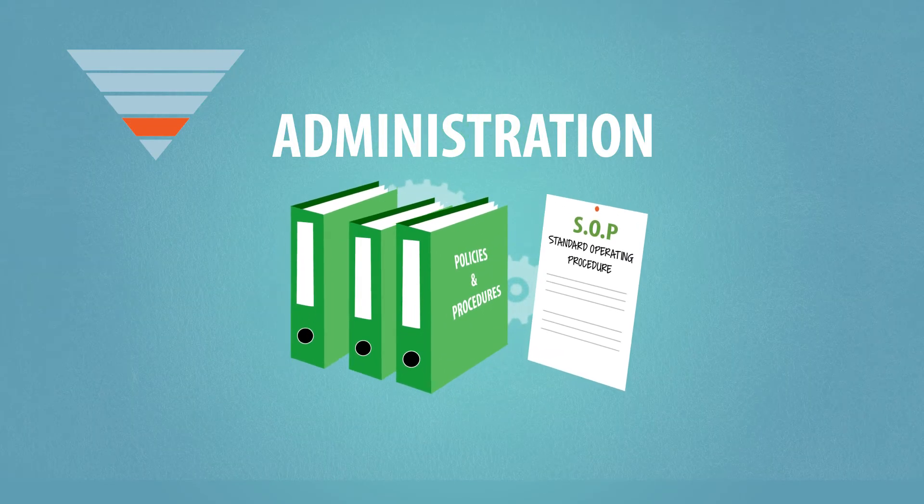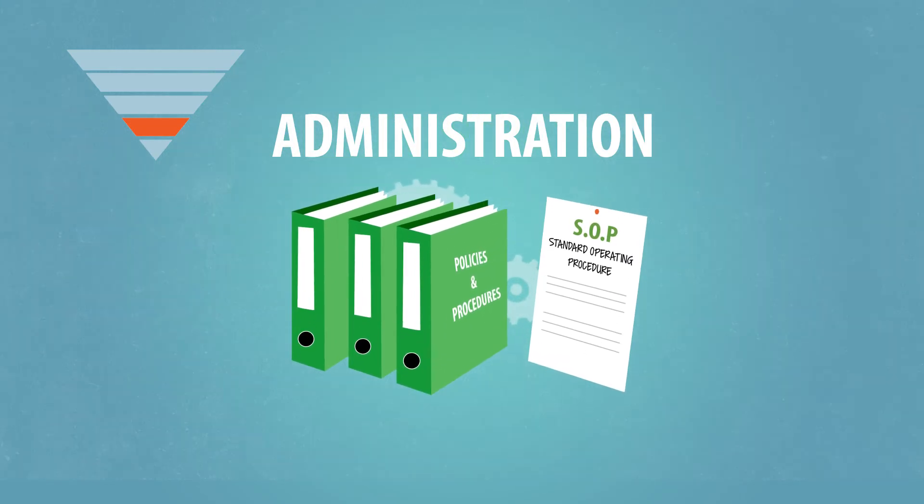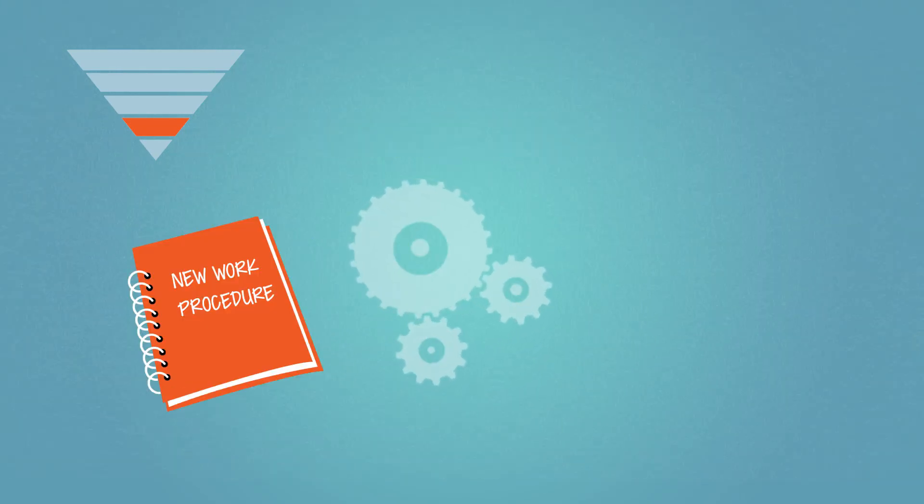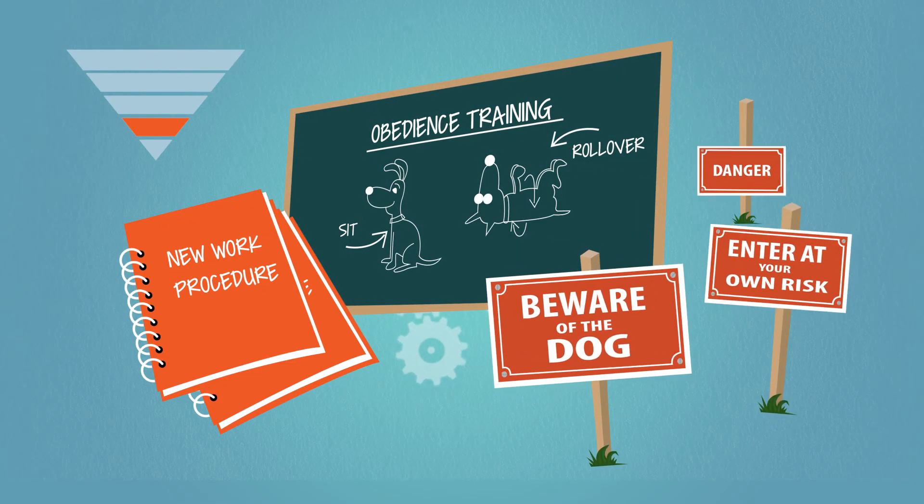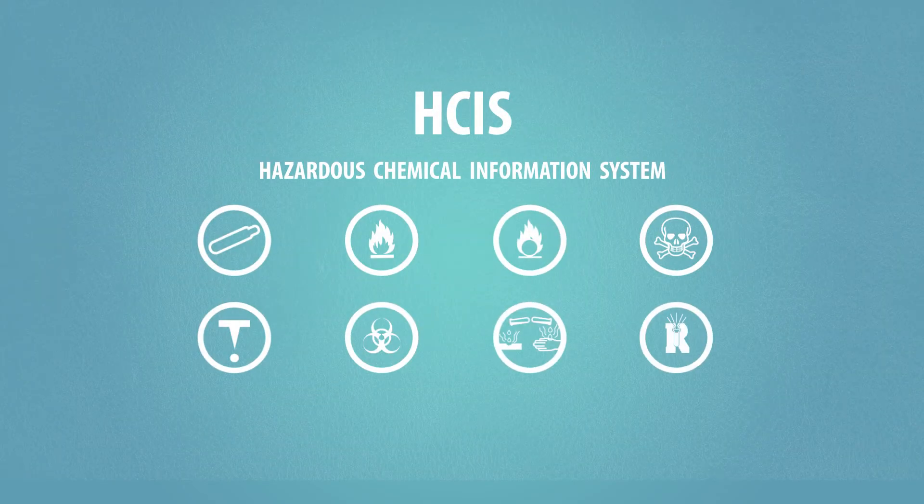Administrative controls are changes to the way people work. Examples of administrative controls include procedure changes, employment training, and installation of signs and warning labels, such as those in the hazardous chemical information system.